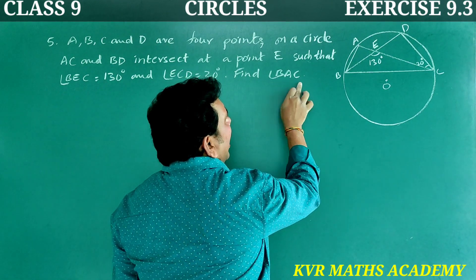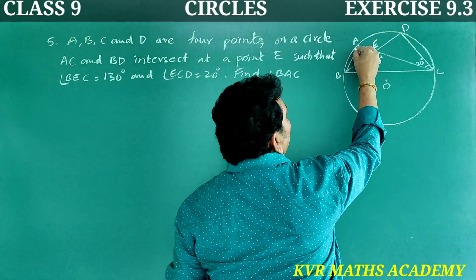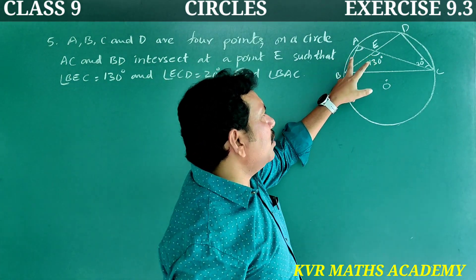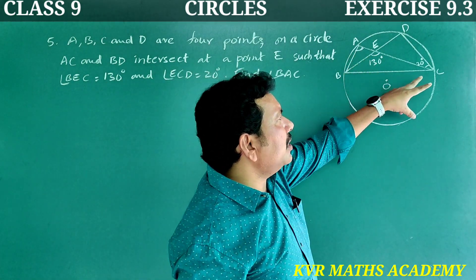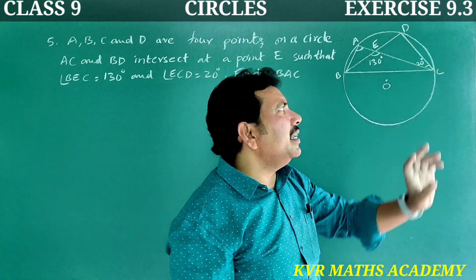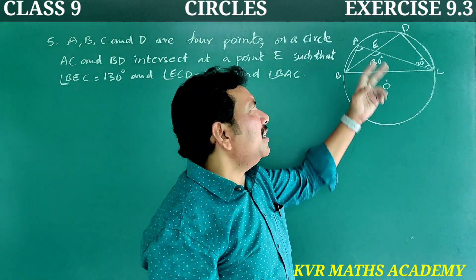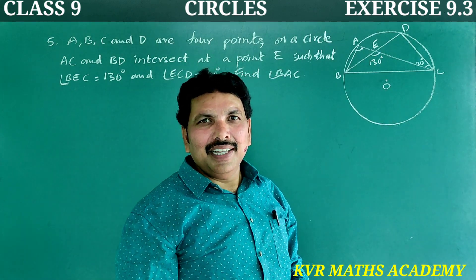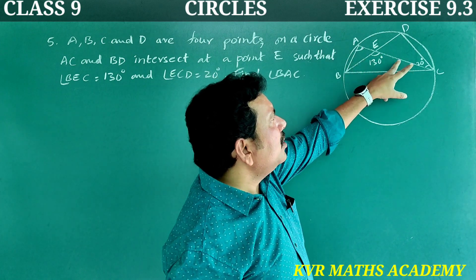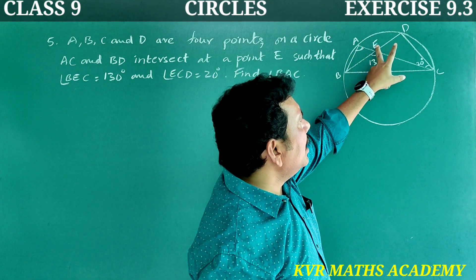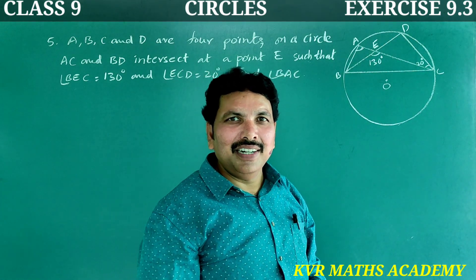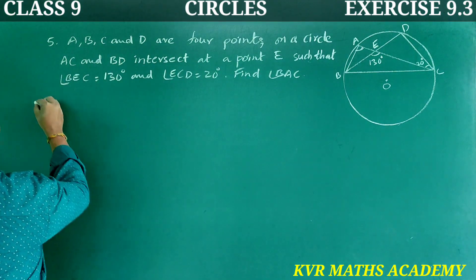We have to find angle BAC. Using angles on the same segment, angle BAC is equal to angle BDC. So let's consider triangle EDC to find the angles inside it.